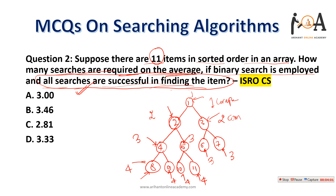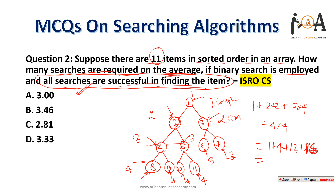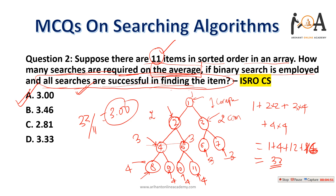Dividing the total 33 comparisons by 11 elements gives 3.0. So option A is correct — on average, 3 comparisons are required. This is an ISRO CS question also once asked in GATE.